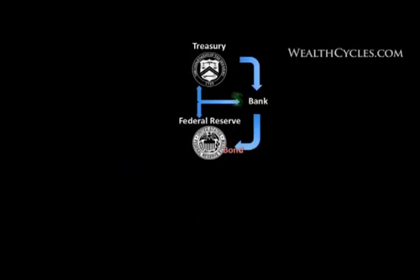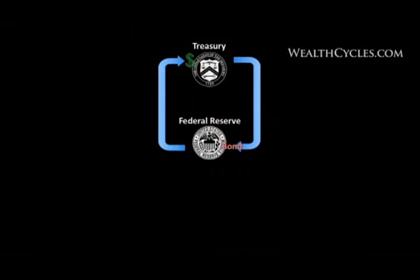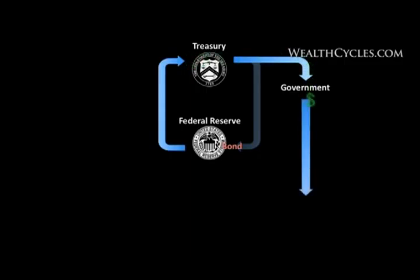Then the next month, those banks go back and show up at a Treasury auction and buy more bonds. What ends up happening is you have this buildup of bonds at the Federal Reserve and base money at the Treasury, and then the government will do some deficit spending, and the government employees, soldiers, and government contractors will deposit that in the commercial banks — your banks.